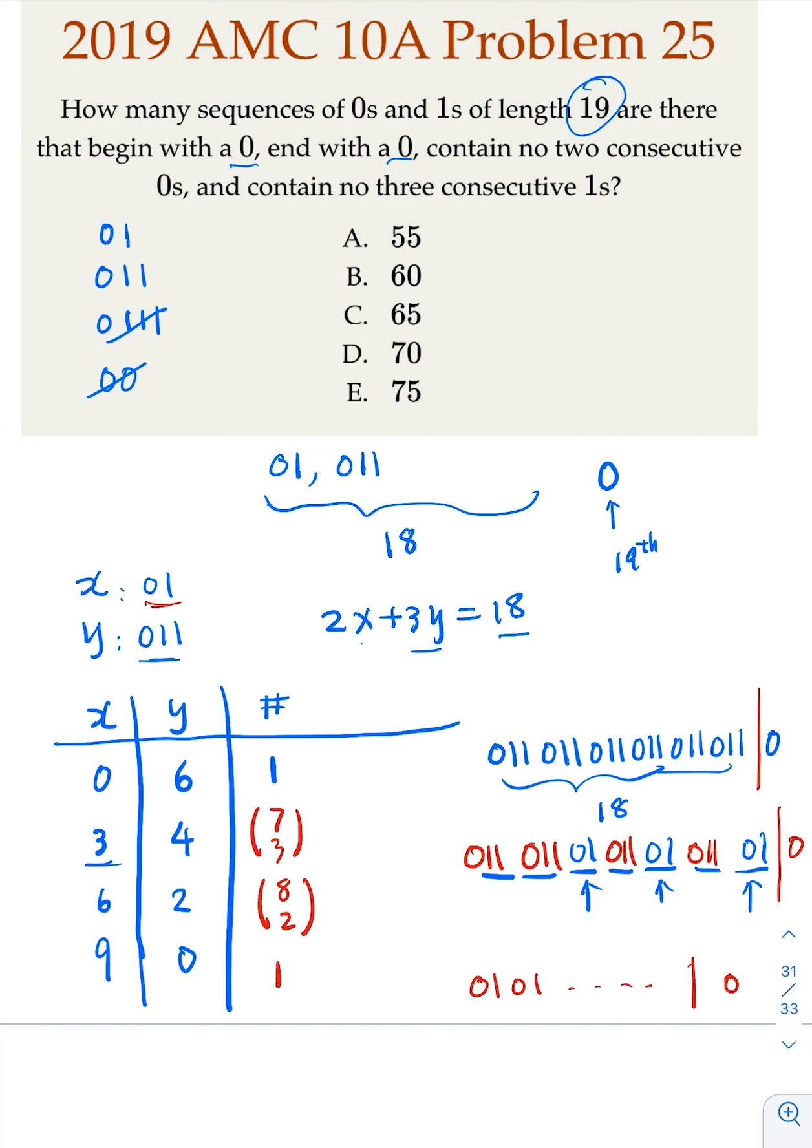So what is the total here? You're gonna have 1 plus, this is gonna be 7 choose 3, divided by 6 equals 35. And this is gonna be 8 times 7 divided by 2. That's 28. And that's equal to 1.